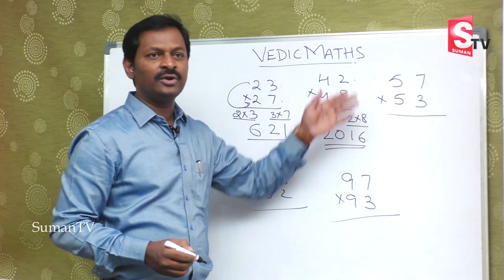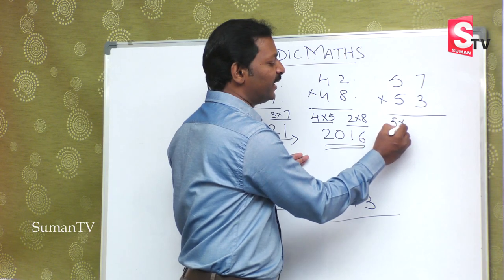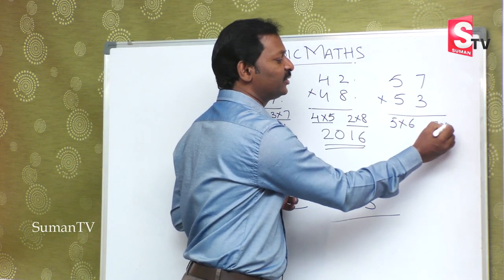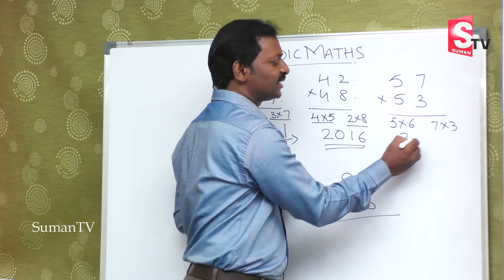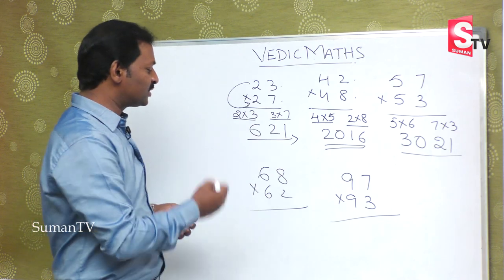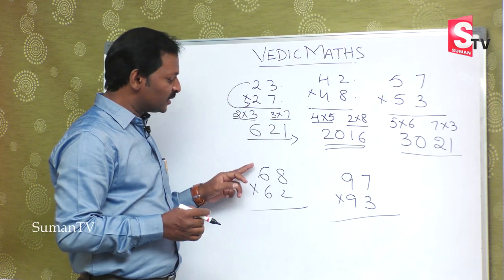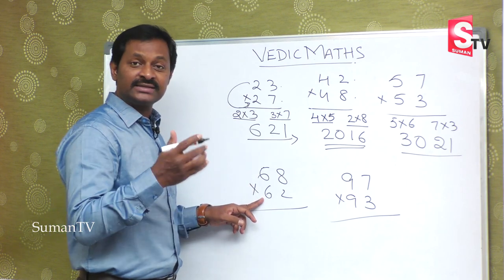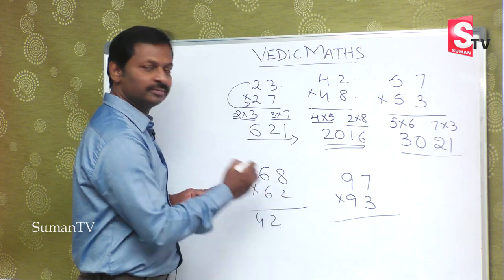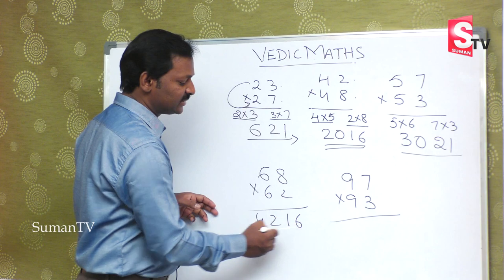For 57 multiplied by 53: 5 is the common number. So 5 into 6 multiplied, and next units 7 into 3. 5 into 6 is 30 and 7 into 3 is 21. For 68 multiplied by 62: 6 and 6 is given, 6 into 7 is 42, and next 8 into 2 is 16. This is the answer.